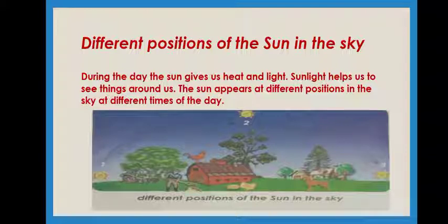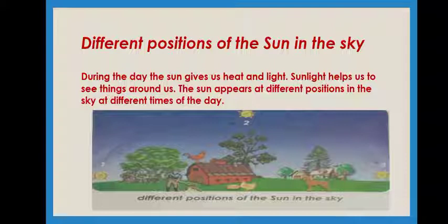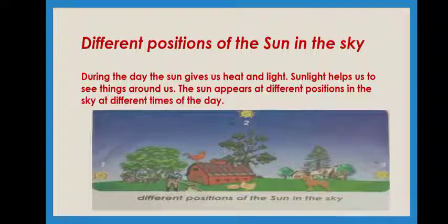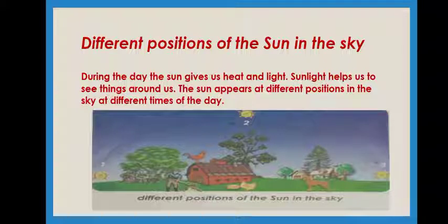What do you mean by this, children? When the sun rises, the climate will be very cool and pleasant, isn't it? That is because the sun shines not so brightly, but very pleasantly. Sun always gives us heat and light. Without sun, we cannot see anything around us. You can see in the picture, position number 1, position number 2, and position number 3 of the sun — these are different positions.